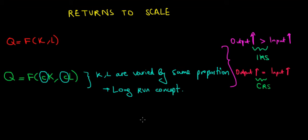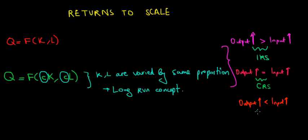The last case is when the increase in output is going to be less than the increase in input. We increase our scale of production — the capital and labor — but the return is not going to be worth it. The output increases very little, much less than what we increase the input by. We are speaking about decreasing returns to scale. We increase the scale, but the returns are falling relative to the increase in input.